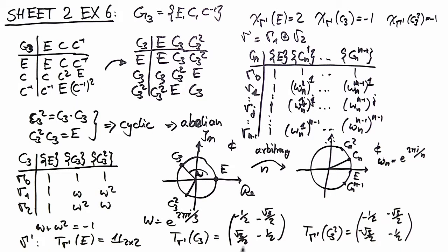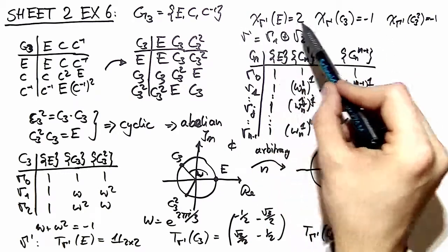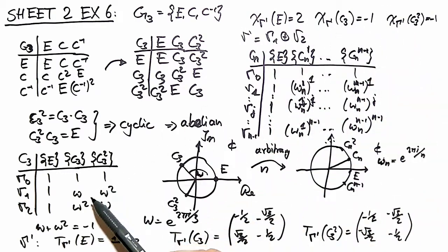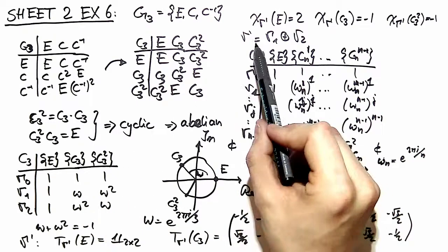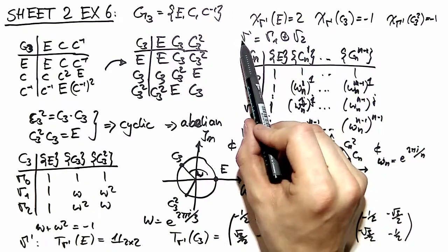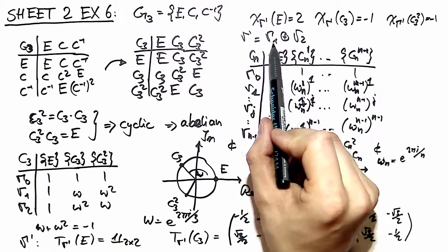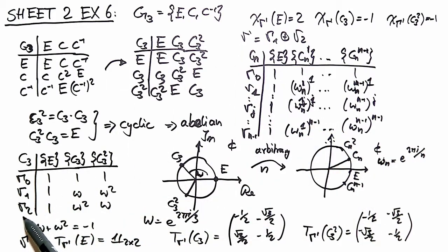This is nothing other than taking the result of exercise 2 of problem set 1 and computing the characters. Once you have the characters, you look back at this character table and conclude that our two-dimensional representation has a decomposition into gamma 1 and gamma 2. Thank you for watching, see you next time.